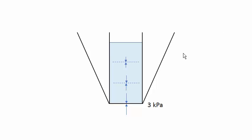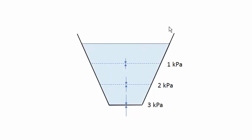So now we have the exact same situation as before with parallel sides. The pressure depends only on depth. When you pour water into this container it's not at equilibrium at first, but it settles down until the pressure is constant at each depth: 1 kilopascal here, 2 kilopascals here, and 3 kilopascals at the bottom.